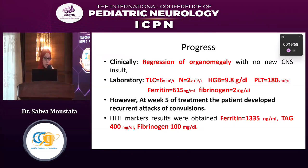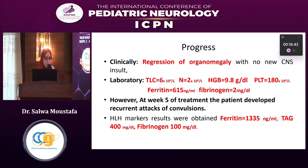The patient showed marked regression of organomegaly with no newly appearing CNS incidents. Laboratory results showed improvement in CBC parameters — improvement in neutrophil count, hemoglobin recovery, and platelet count — as well as reduction in ferritin and elevation of fibrinogen. However, at week five of treatment, the patient developed another attack of convulsions, and repeated HLH markers showed elevation of ferritin and consumption of fibrinogen.